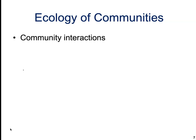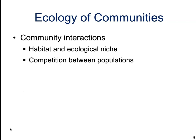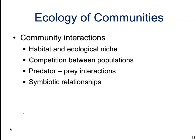This chapter is going to examine the various types of community interactions and their importance to the structure of the community. Such interactions illustrate some of the most important evolutionary selection pressures acting on individuals, and they also help us develop an understanding of how biodiversity can be preserved. The community interactions we're going to be discussing are habitat and ecological niche, competition between populations, predator-prey interactions, and symbiotic relationships.